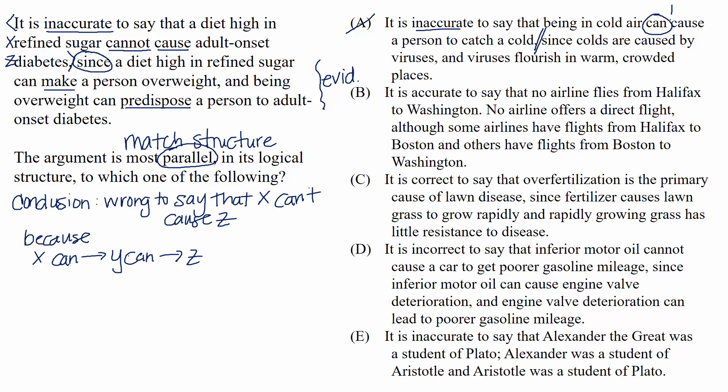B. It is accurate to say, nope, nope, stop right there. It is accurate to say is a confirmation of a belief. But the passage denies a belief. The structure is different, so we can rule this choice out.